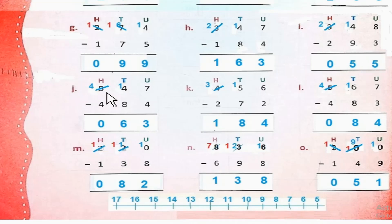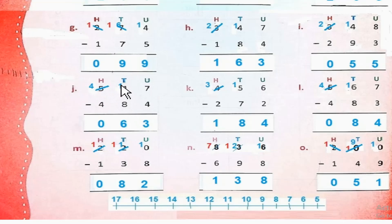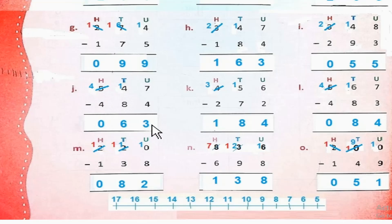Part J: 547 minus 484. 7 minus 4 = 3. 4 से 8 minus नहीं होता। So हम 5 से 1 borrow करेंगे — यह 4 रह जाएगा, और यह 14 tens हो जाएगे। 14 minus 8 = 6. 4 minus 4 = 0. So the answer is 63.